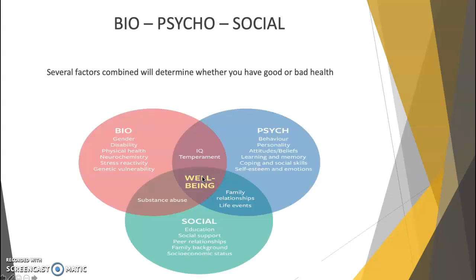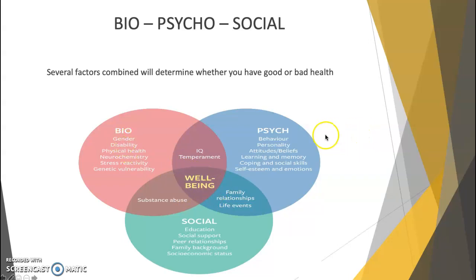We're going to be looking at the biopsychosocial model. If you're taking notes, Google a guy called Engel — spelled E-N-G-E-L. In 1977, he came up with the biopsychosocial model of health, coming from the frustration that health is not a state you achieve across all three dimensions at once. He believed several factors combine to determine whether you have good or bad health: biological, psychological, and social. In the centre of the model is well-being.